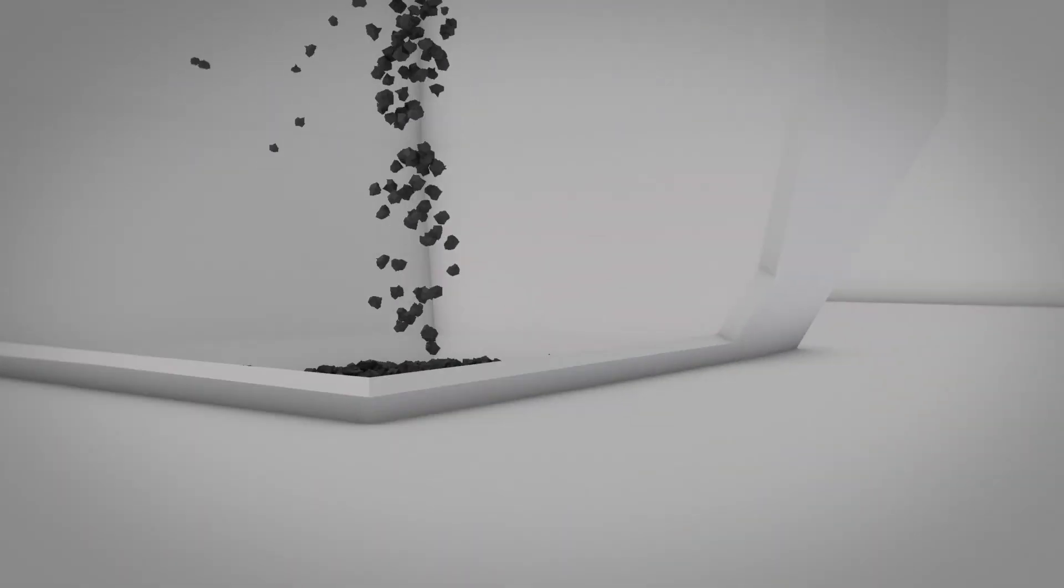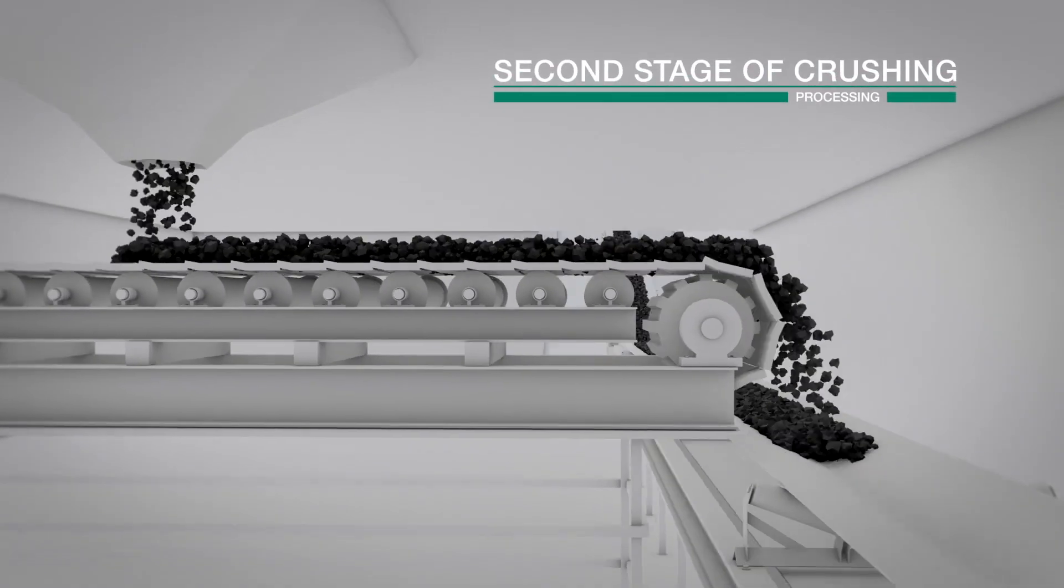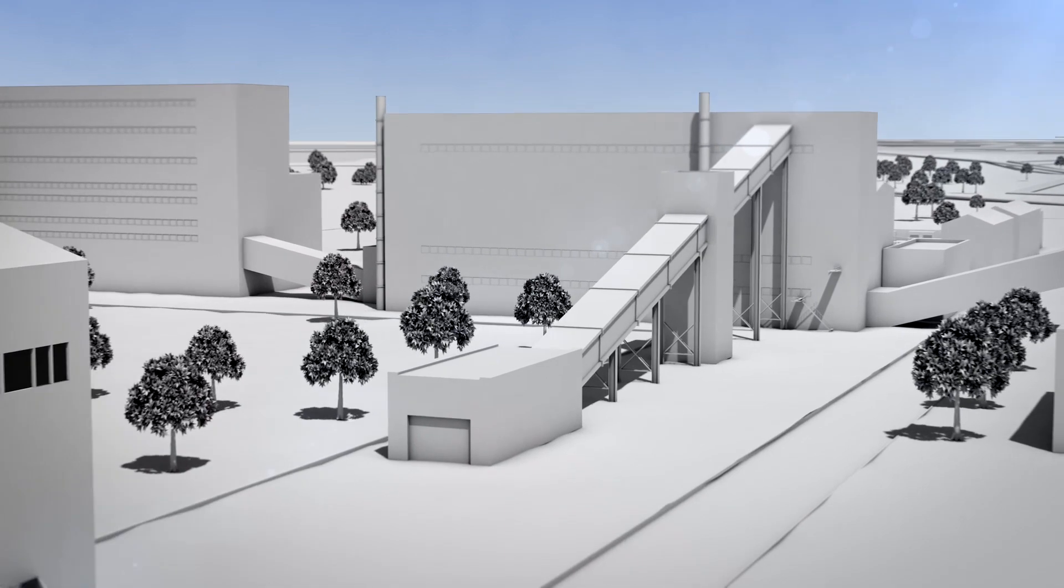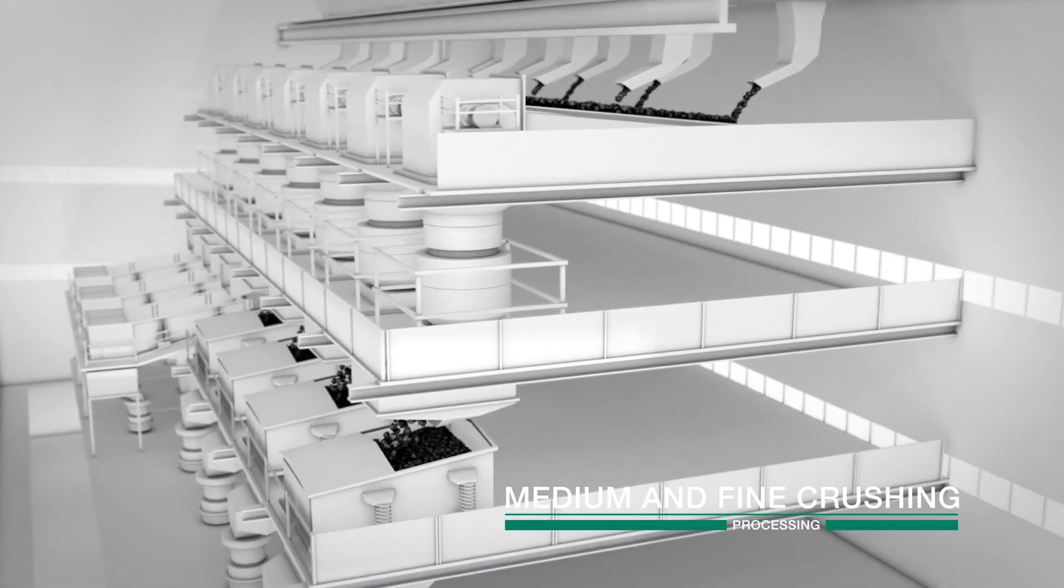The conveyor system delivers ore to the medium crushing facility, the second stage of crushing. The ore is crushed using cone crushers.